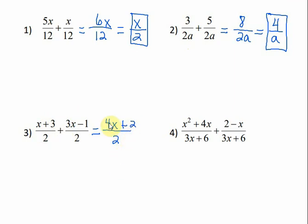We need to reduce if we can, and this binomial has a greatest common factor of 2. We factor out the 2, and we're left with 2x plus 1 over 2. These 2's would cancel, and my answer is 2x plus 1.